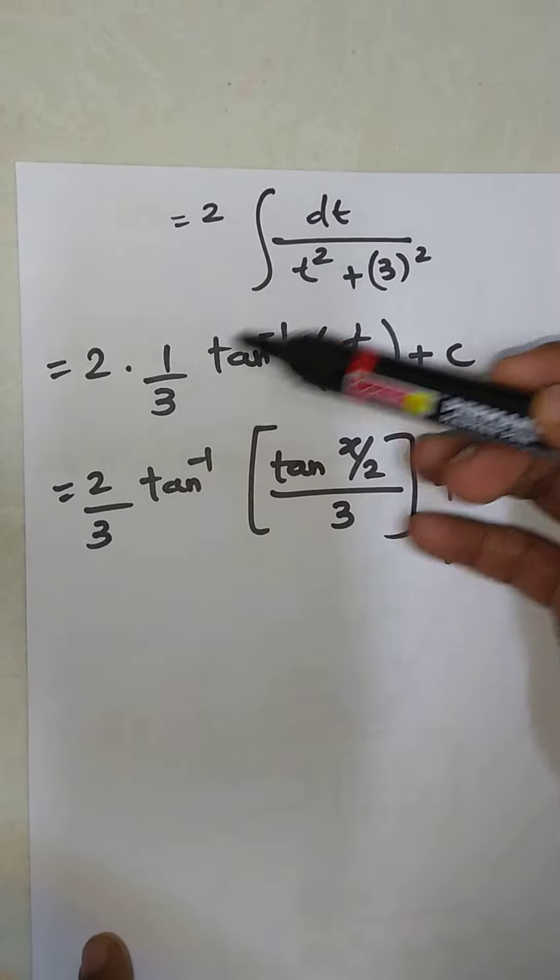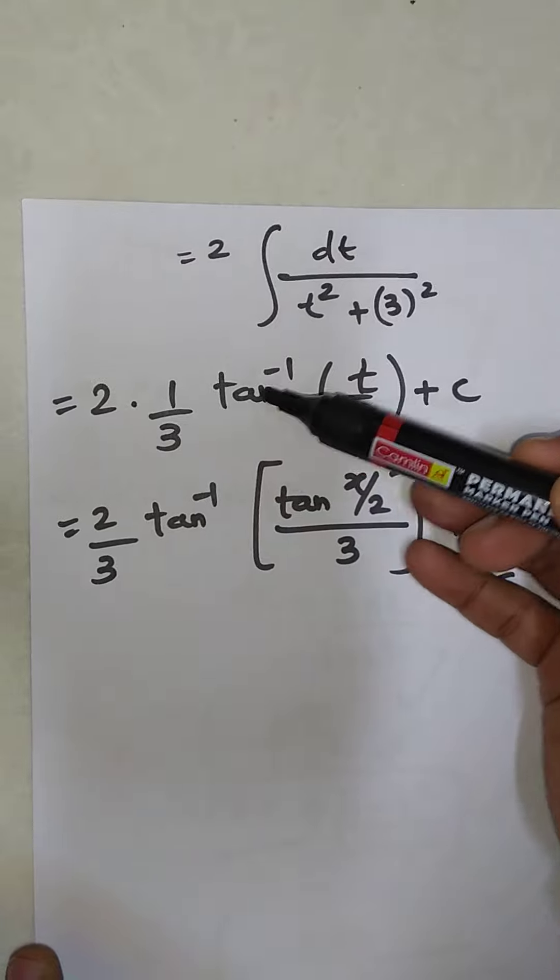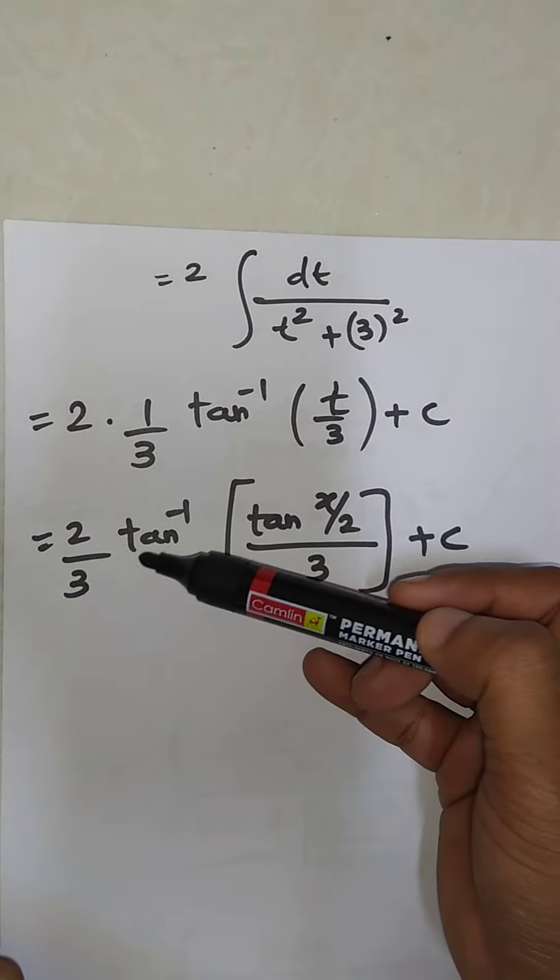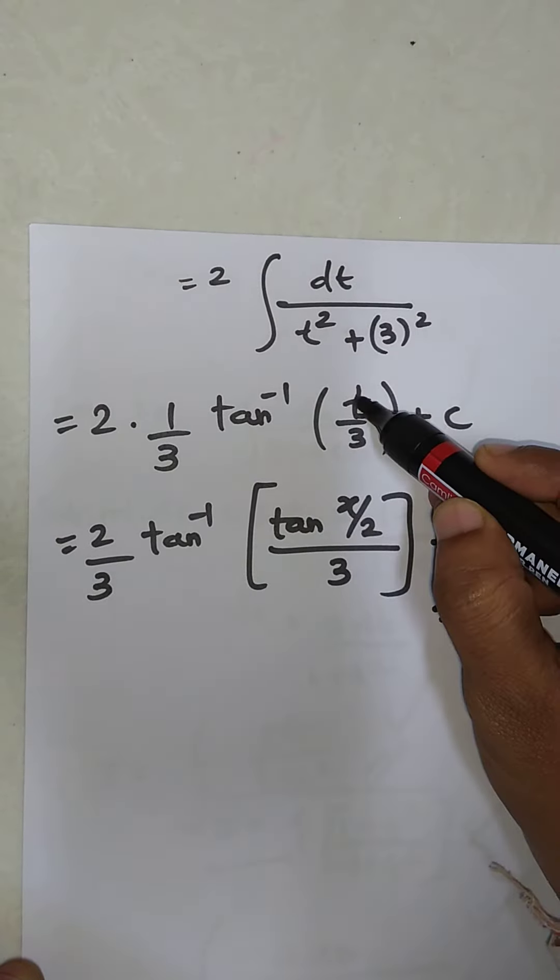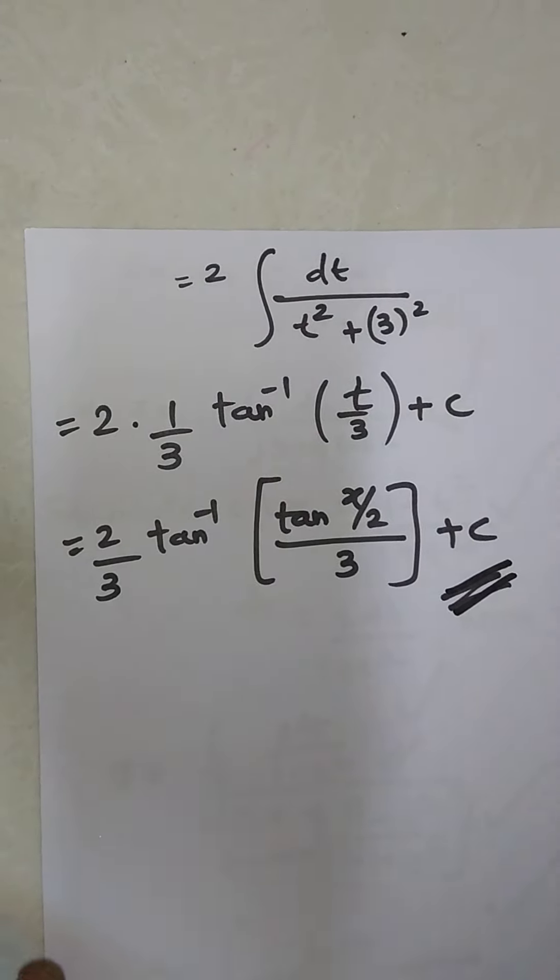This gives 2 × (1/3)tan⁻¹(t/3) + C, which equals (2/3)tan⁻¹(t/3) + C. Now replace t with tan(x/2), so the final answer is (2/3)tan⁻¹(tan(x/2)/3) + C. Thank you.